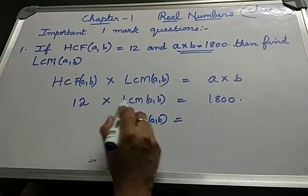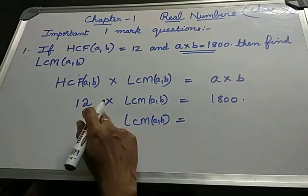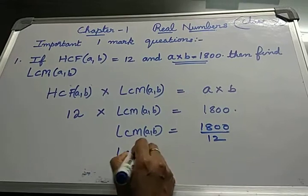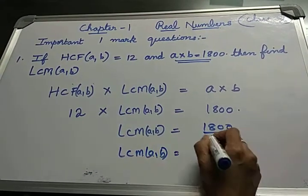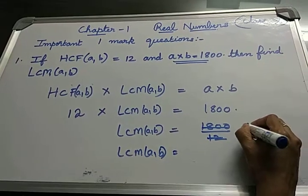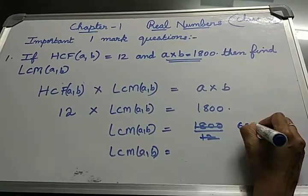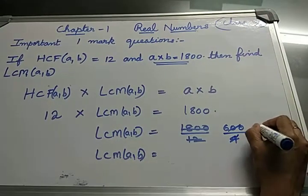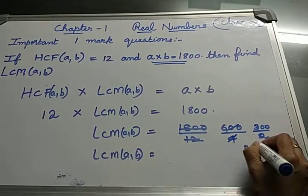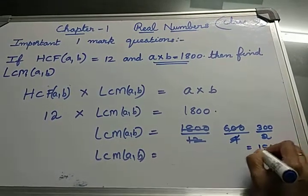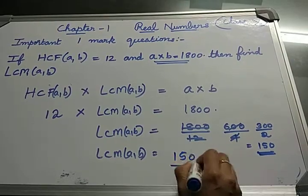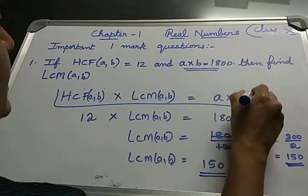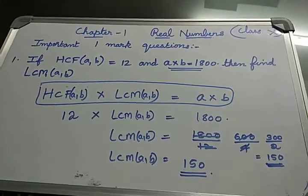This is 12 into LCM. When you transpose to the other side, this multiplication becomes division. Now simplify - you can cancel this. 600 divided by 4, again cancel. 300 divided by 2 which is 150. So LCM of two numbers is 150. Remember: HCF into LCM is nothing but product of numbers.